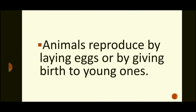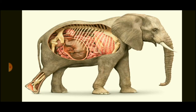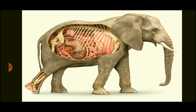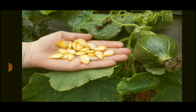Animals reproduce by laying eggs or by giving birth to young ones. Some animals like birds, insects, and snakes lay eggs, and young ones hatch from those eggs. Other animals like cows, horses, and even human beings give birth to young ones. Animals that give birth to young ones are called mammals. Most plants reproduce through seeds, and these seeds give rise to new plants.